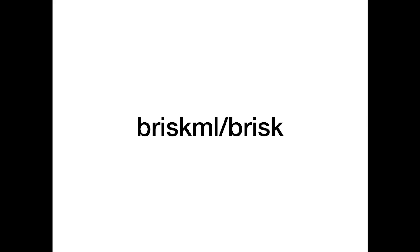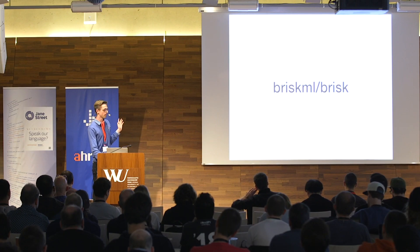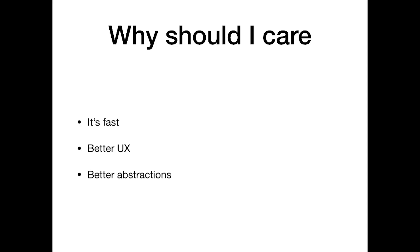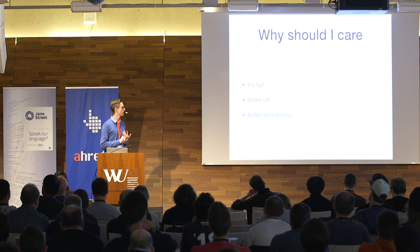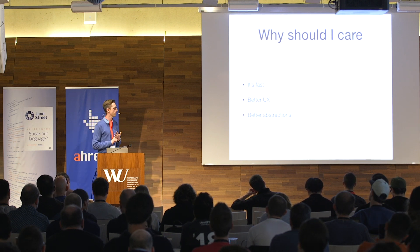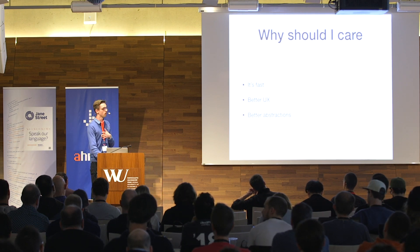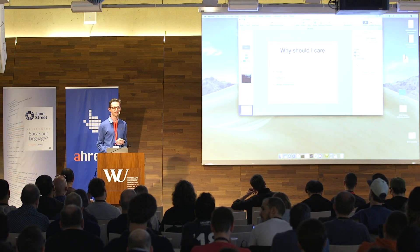You can see Brisk at the brisk-command/brisk repo, and Reverie at the reverie-ui/reverie repo. So why should you care? Native programs are typically — not always, but typically — faster, they usually provide better UX, and we can figure out better abstractions if we start with OCaml or Reason from the beginning.